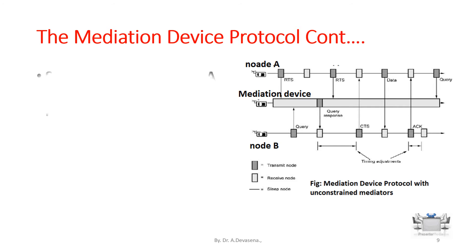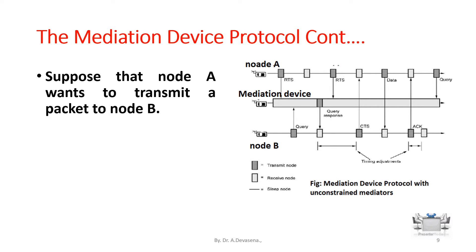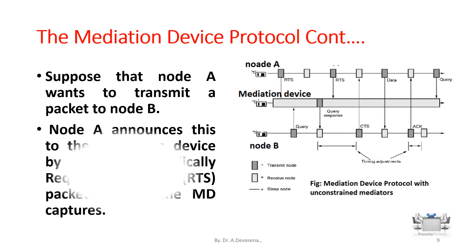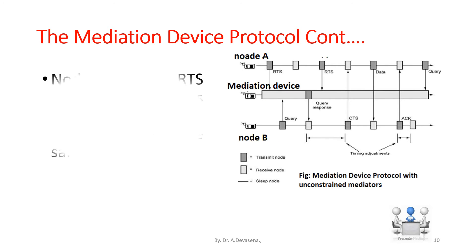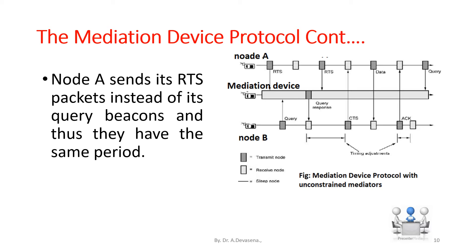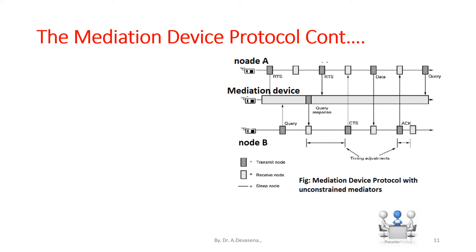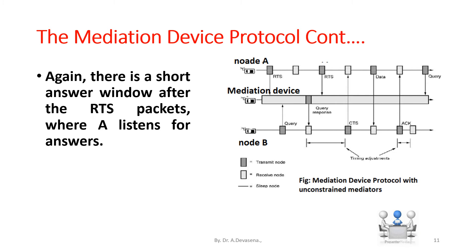Suppose that node A wants to transmit a packet to node B. Node A announces this to the mediation device by sending periodically Request to Send, that is RTS packets, which the mediation device captures. Node A sends its RTS packets instead of its query beacons and they have the same period. There is a short answer window after the RTS packets where A listens for answers.